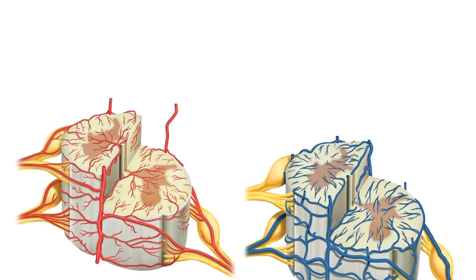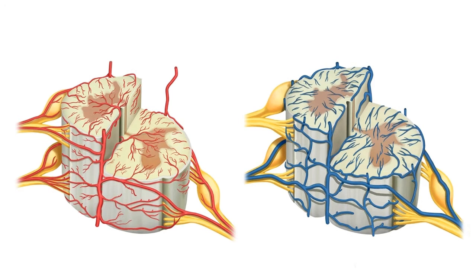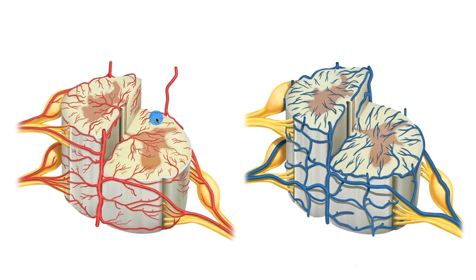Before we begin this tutorial, I'm just going to give you a quick overview of some components of the spinal cord. Here we can see the grey matter of the spinal cord and the white matter of the spinal cord. Here we have the anterior horn, the lateral horn and the posterior horn with the central grey matter, and here we have the anterior funiculus, the lateral funiculus and the posterior funiculus.